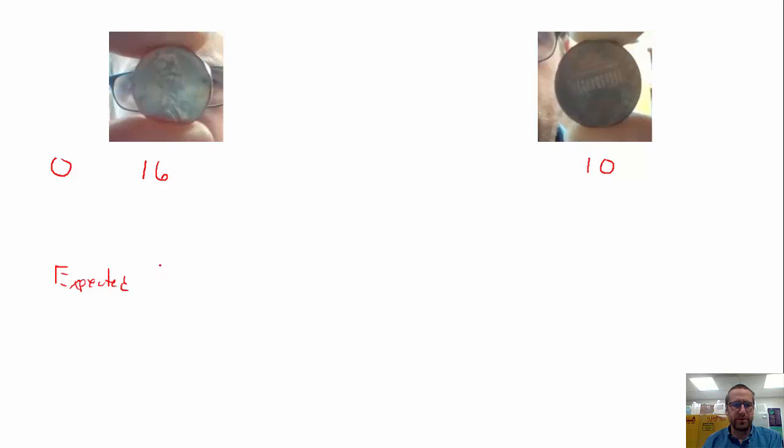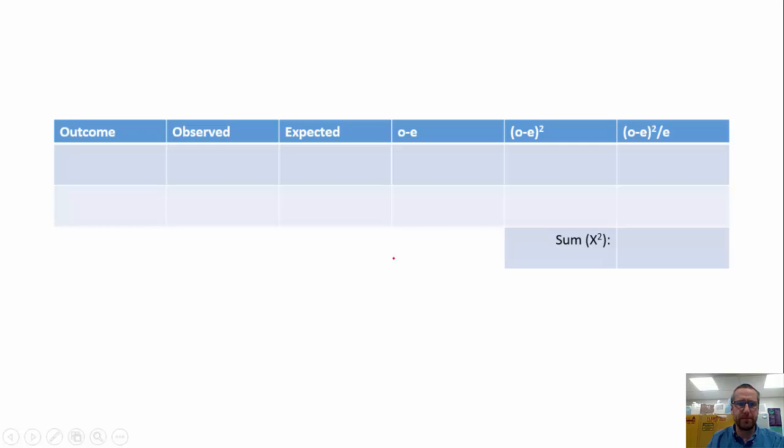hopefully you have a general gist that if you have 26 coins flipped, you should end up with 13 heads and 13 tails. So that's what we're going to work with for our observed 16 and 10 and our expected values, and we'll conduct a chi-square test on that.